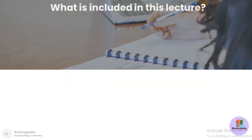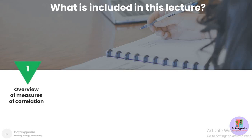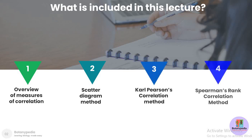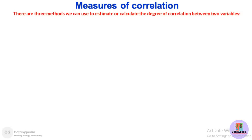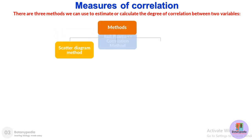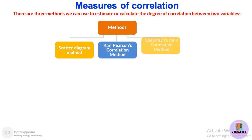So what is included in this lecture? First we will have an overview of this topic followed by a detailed account of three methods used for measuring correlation. The first method is the scatter diagram method, then Carl Pearson correlation method, and finally the Spearman rank correlation method.